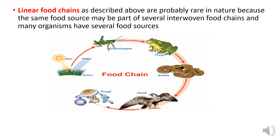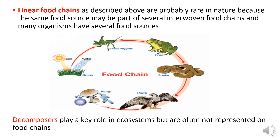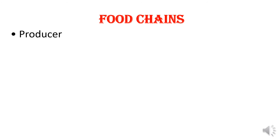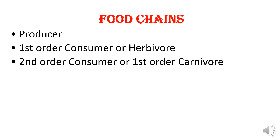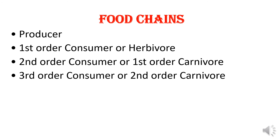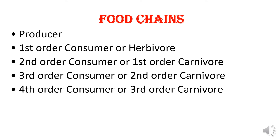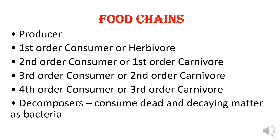Food chain. Linear food chains are probably rare in nature because the same food source may be part of several interwoven food chains, and many organisms have several food sources. Decomposers play a role in ecosystems but are often not represented on food chains. The food chain includes: 1st order consumers or herbivores, 2nd order consumers or 1st order carnivores, 3rd order consumers or 2nd order carnivores, 4th order consumers or 3rd order carnivores, and decomposers such as bacteria that consume dead and decaying matter.